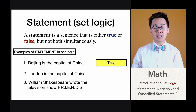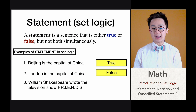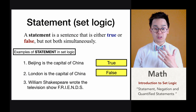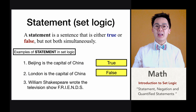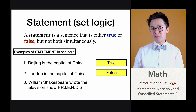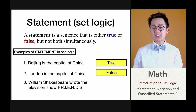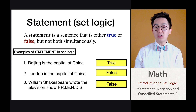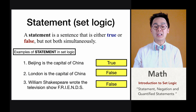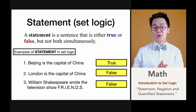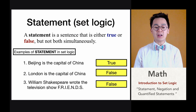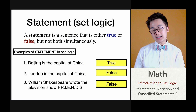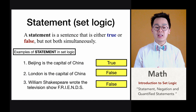Number two is also a valid statement in logic because it is a false statement — we know London is not the capital of China. Number three, William Shakespeare wrote the television show Friends, is also a false statement because Shakespeare existed way before television was invented. Both false statements are valid in set logic.